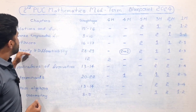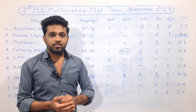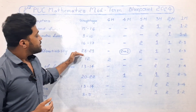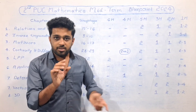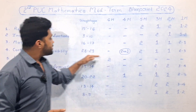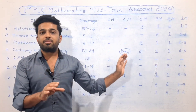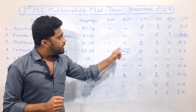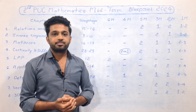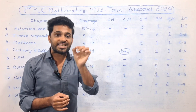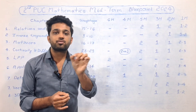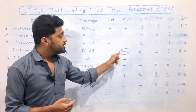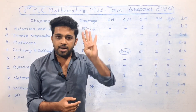The next chapter is Continuity and Differentiability. This is the highest weightage chapter, carrying 28 to 29 marks in the mid-term exam. Question number 47 is 100% from the Continuity and Differentiability chapter — it is a 4-mark question that will definitely be asked.